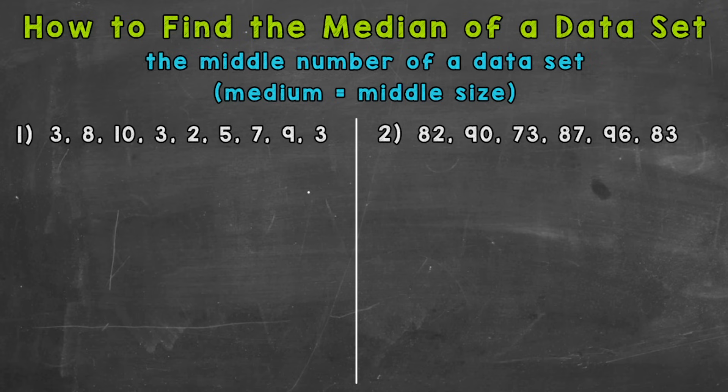Because sometimes once you add mean, median, mode, and range and put them all together, it can be hard to think about which is which. So you have to make connections. And my connection is medium equals middle size. And it kind of sounds like median. So we have two examples that we're going to go through together in order to get this down.